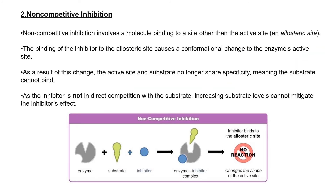The second type is non-competitive inhibition. In non-competitive inhibition, a molecule binds to a site other than the active site of the enzyme. Unlike competitive inhibition where the inhibitor resembles the substrate and binds to the active site, here the inhibitor binds somewhere else. The binding of the inhibitor to this allosteric site causes a conformational change to the enzyme, altering the active site's shape.